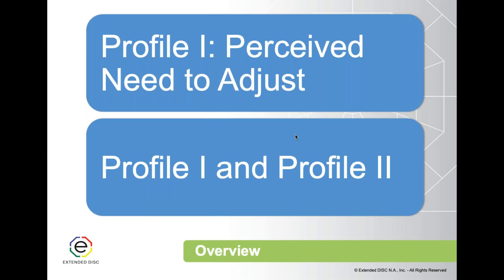Within the Extended DISC reports you have two profiles that represent one individual. Profile 1 is your perceived need to adjust — it's how the person perceives they need to modify their behavior in the present environment in order to succeed.